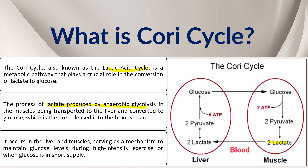Lactic acid is a dead-end product because it cannot be further utilized everywhere. So lactic acid is transported through blood circulation to the liver, where it is converted back to glucose through the gluconeogenesis process. In the muscles we have anaerobic glycolysis producing lactic acid; this lactic acid transfers to the liver where gluconeogenesis occurs, and the resulting glucose is transferred back to the muscles for reutilization.